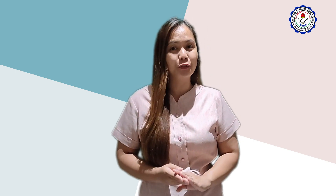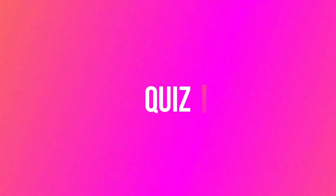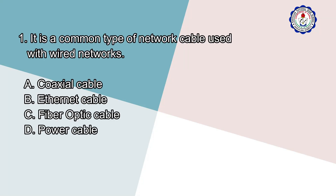Before we end this lesson, I would like you to answer this short quiz. Number 1: It is a common type of network cable used with wired networks. A. Coaxial Cable, B. Ethernet Cable, C. Fiber Optic Cable, D. Power Cable.